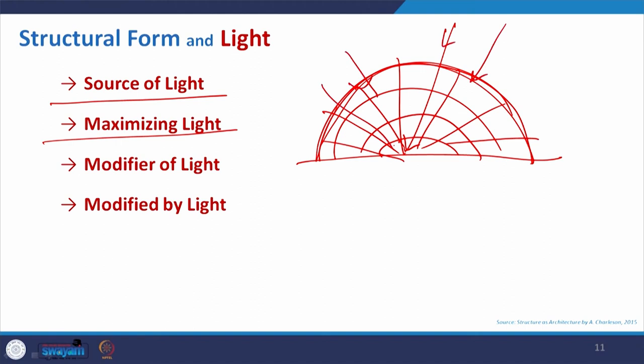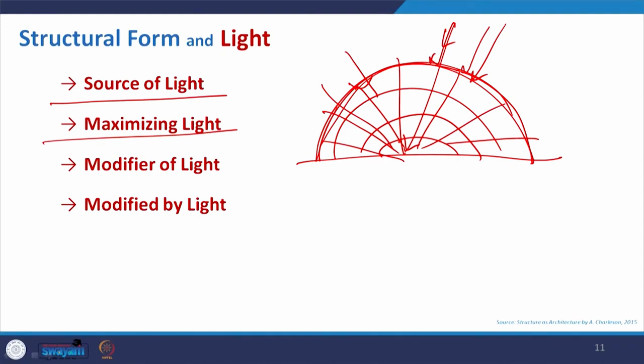Where we use maximum daylight, many times we will avoid glare, so we get diffuse light or sometimes direct light. The modifier of light is where structure is used to modify the light — it creates light and shade combinations which enhance the visual quality of architecture, as we discussed the different visual qualities at the beginning of this lecture.